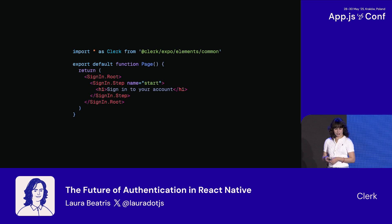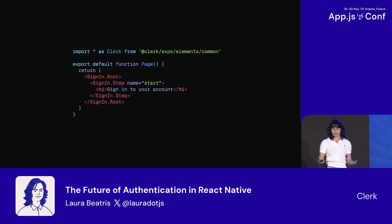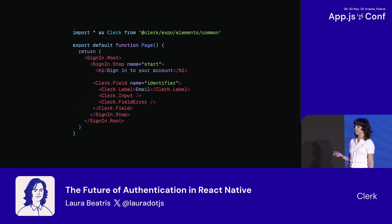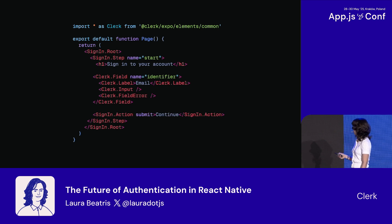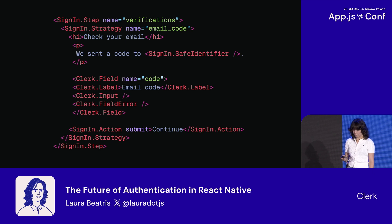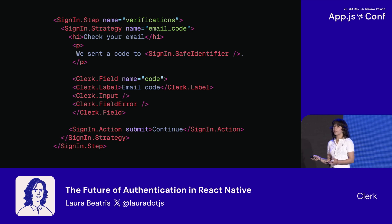Coming up: Clerk Elements for Expo. Last year, we introduced Clerk Elements for the web — the idea of headless components with accessibility for auth, where the developer doesn't have to build their own markup interacting with React hooks, but can build like Lego blocks. That's the same DX goal we have for Expo. If you want to build a sign-in page, start by declaring a step. You can put your identifier field there, the action to continue, and if you want OAuth, you can create a connection button to sign in with Google. If you want to make it even stronger for security, you can add a verification step with email code OTP. Every single slot here gets translated to native code behind the scenes with Clerk iOS and Clerk Android.